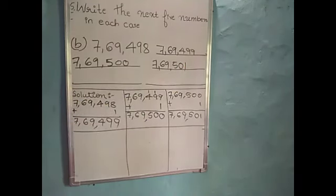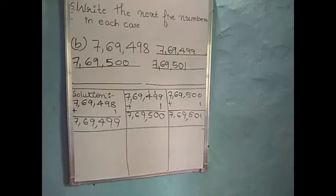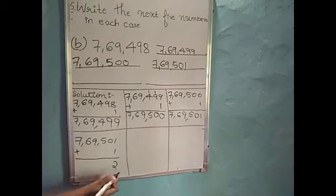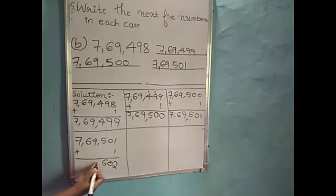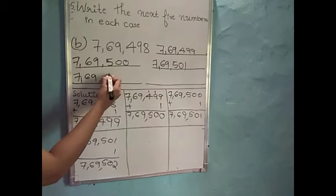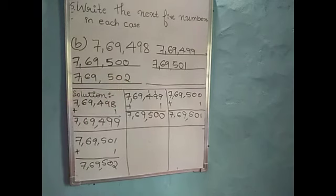Next we have to find out the next number. We have to add 1 to this number to get the next number. So I will write here 7,69,501. After that I will add 1: 1 plus 1 is 2. Write remaining numbers as it is: 0, 5, 9, 6 and 7. So 7,69,502 is the next number.